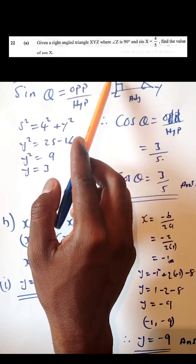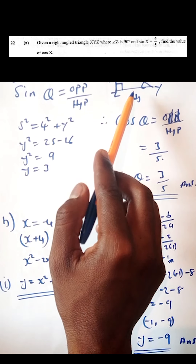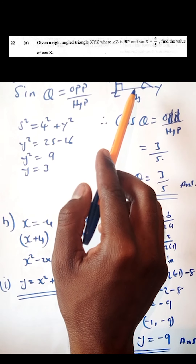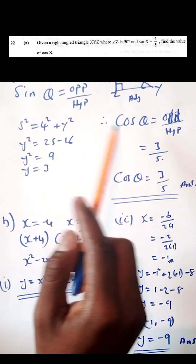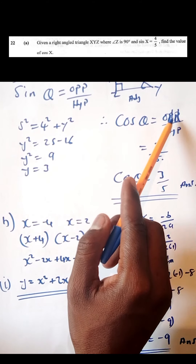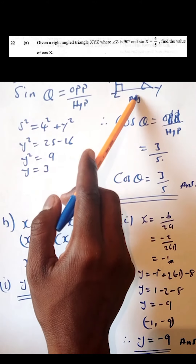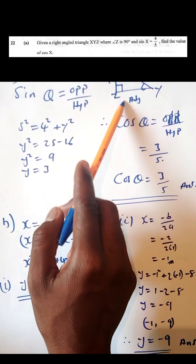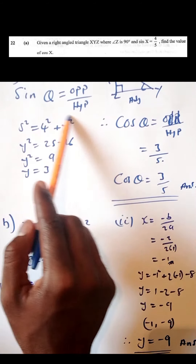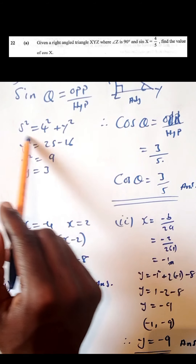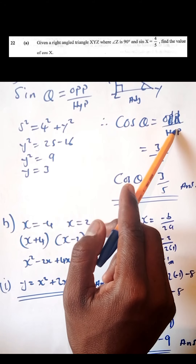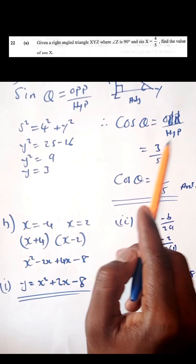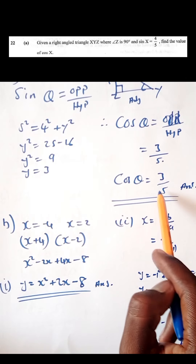To find cos x, we use cos θ = adjacent/hypotenuse. We need to find the adjacent side using Pythagoras' theorem. Solving, the adjacent = 3. Therefore cos x = 3/5, and that is the answer.